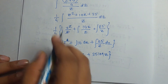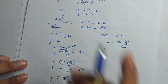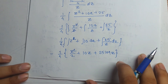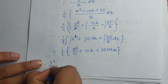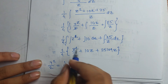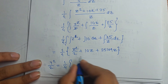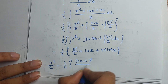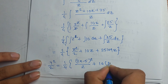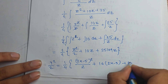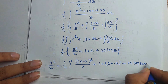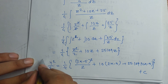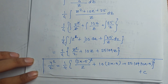Substituting back z = 2x − 5, the final answer is: y²/2 = (1/4)[(2x − 5)²/2 + 10(2x − 5) + 25·log(2x − 5)] + c. This is the final answer of the third equation.